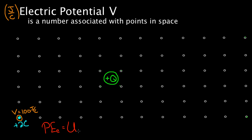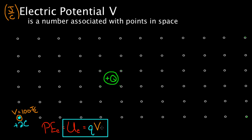Electric potential energy — sometimes written as PE, sometimes as U. The formula is just Q: you take the Q that you stick at that point in space — in this case it was two coulombs — multiply it by the value of the electric potential, and that tells you how many joules there will be for the charges in that region. This electric potential energy is between the charge that created the V and the charge that you stick at that point. V is a quick way to figure out the electric potential energy. In this case, two coulombs times 100 joules per coulomb gives 200 joules of potential energy stored between these charges.